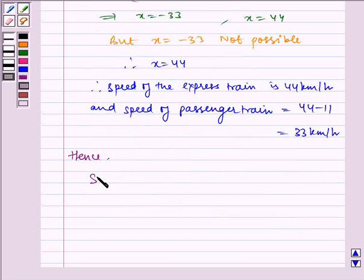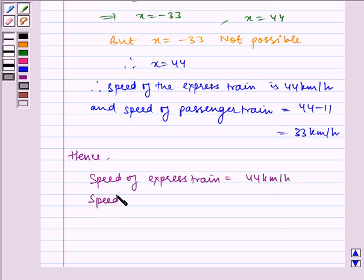Hence, speed of express train is equal to 44 kilometer per hour and speed of passenger train is equal to 33 kilometer per hour.